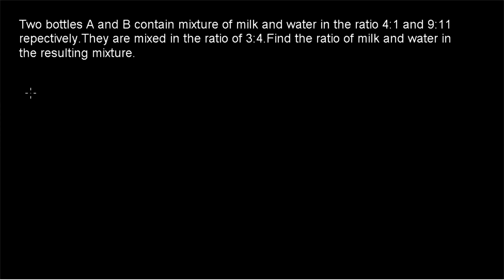Hi friends, welcome to today's class. Today's question is: two bottles A and B contain a mixture of milk and water in the ratio 4:1 and 9:11 respectively. They are mixed in the ratio 3:4 — find the ratio of milk and water in the resulting mixture. These types of questions are not very common in competitive exams, but it is a type of problem which may come, so we have to cover this.